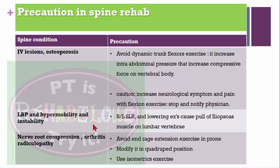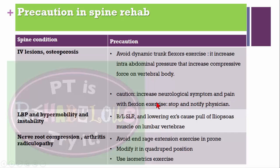When we are looking at patients and giving exercises, we have to remember some precautions in spine rehabilitation. For conditions like intervertebral disc lesions or osteoporosis, we need to avoid dynamic trunk flexor exercises because that increases intra-abdominal pressure, which will cause an increase in compressive force on the vertebral body. If there is an increase in neurological symptoms or pain with flexion exercise, we have to stop and notify the physician.